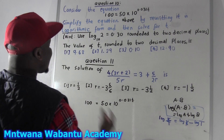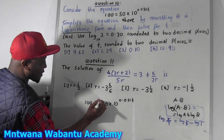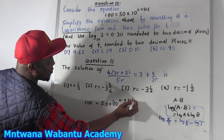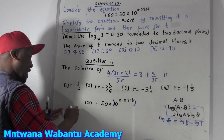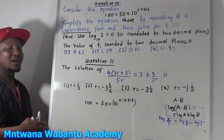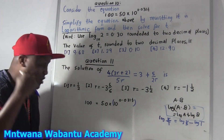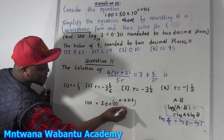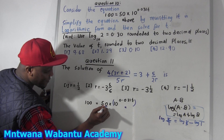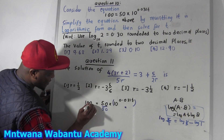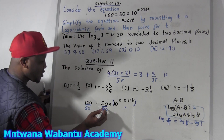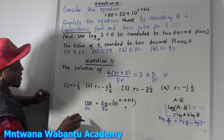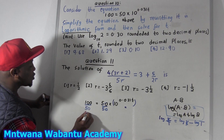So now we come here. Since we need to get T, look — this is the one that has the power. So I'm going to apply log to both sides. But before I do that, I need to isolate the exponential. You see here — it's 50 times this number. So first divide both sides by 50. 50 and 50 cancel, and 100 divided by 50 equals 2.